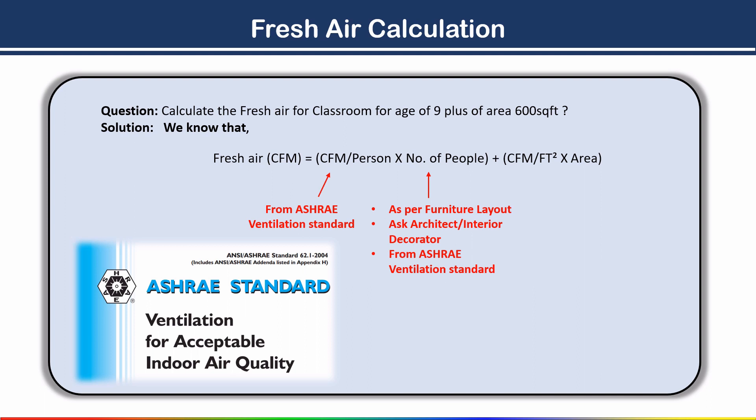The CFM per square feet value also comes from the ASHRAE ventilation standard. The area value is given in the question — you get it from the AutoCAD file. Using the list command you can easily calculate the area of the space for which you are calculating the fresh air.